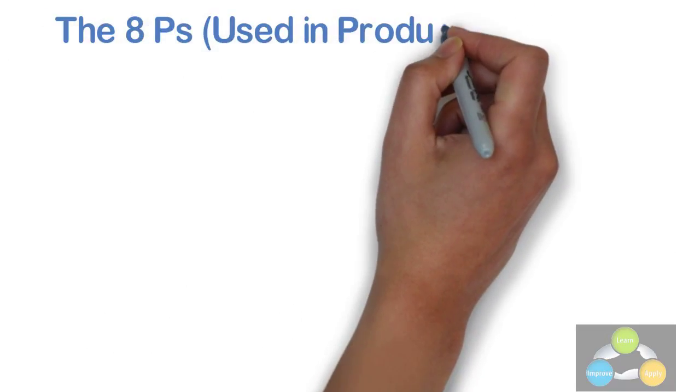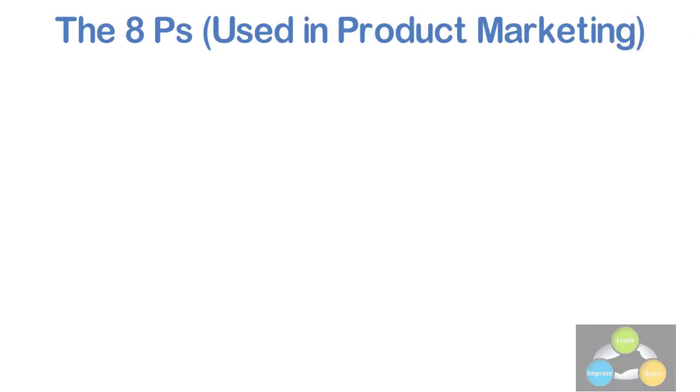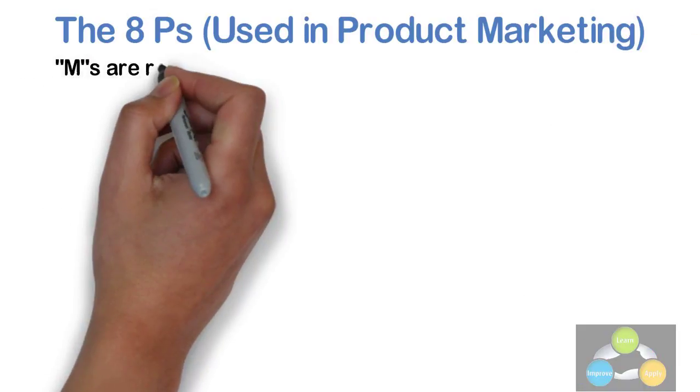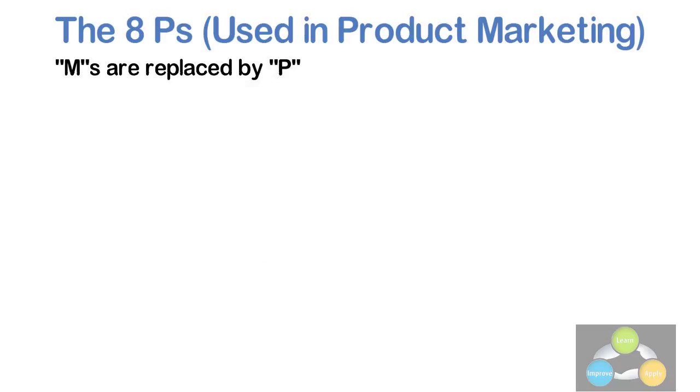The 8 P's used in product marketing. In product marketing, M's are replaced by P's. This common model for planning in product marketing is also used in root cause analysis.